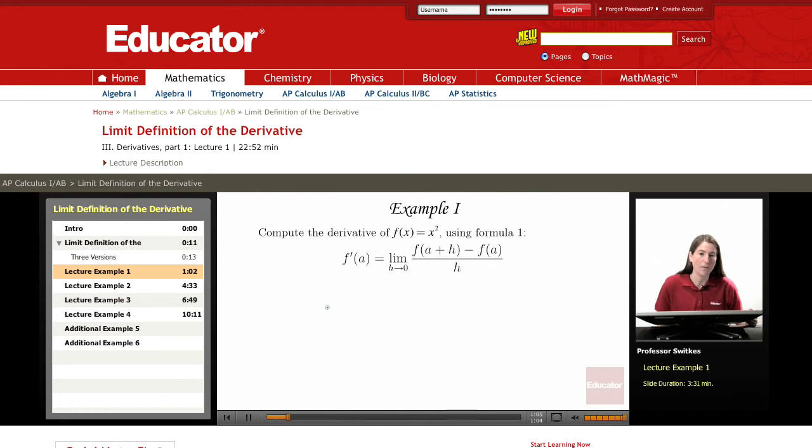In this first example we'll compute the derivative of f(x) = x² using formula 1, and evaluate this derivative at a = 5. So f'(5) will equal the limit as h approaches 0 of the fraction. In the numerator we need f(a+h).